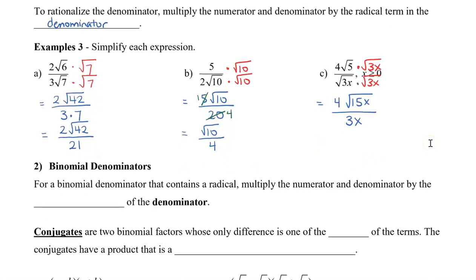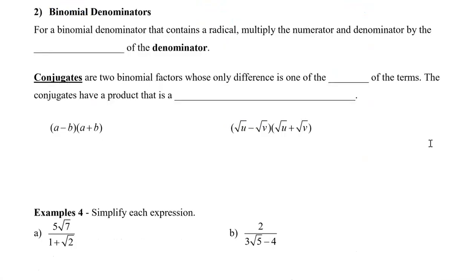Next I'm going to show you how to rationalize binomial denominators. For a binomial denominator that contains a radical, we're going to multiply the numerator and the denominator by the conjugate of the denominator. Conjugates are two binomial factors whose only difference is the sign of one term, and when multiplied they produce a difference of squares.